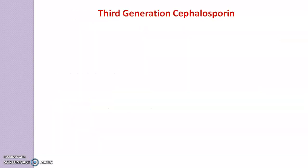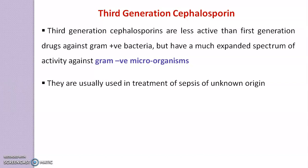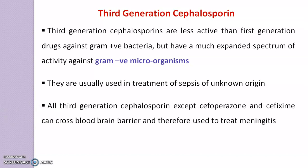Moving to the 3rd generation cephalosporins: these are less active than 1st generation cephalosporins against gram-positive bacteria but have a much expanded spectrum of activity against gram-negative microorganisms. They are usually used in the treatment of sepsis of unknown origin.